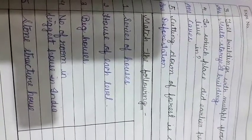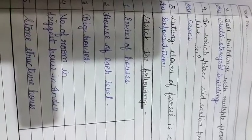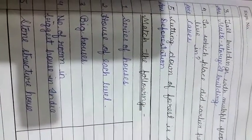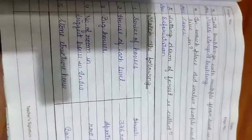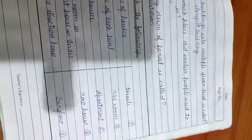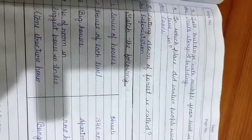Cutting down of forests is called deforestation. Now see match the column: a series of houses is known as row house; houses on each level are apartments; big houses are bungalows; the number of rooms in the biggest house of India is 346 rooms; a stone structure house is known as 'haveli.' Thank you students, Jai Gurudev.